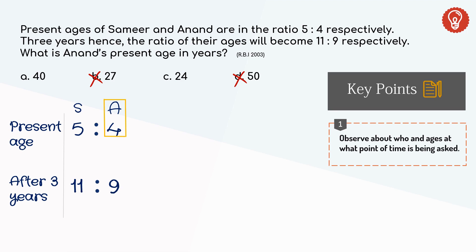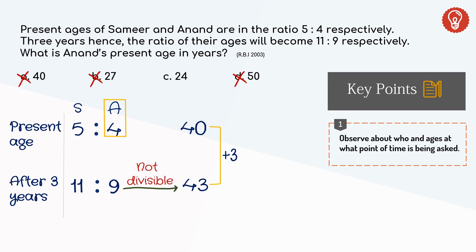Let's find if it's 40 or 24. Anand is representing the number 9 after 3 years. Suppose you thought 40 is the correct answer — say Anand is 40 today, after 3 years he is 43. 43 is not divisible by 9, hence 40 is the wrong choice.